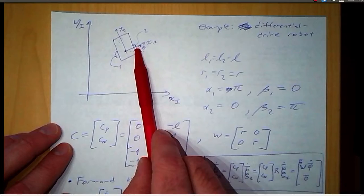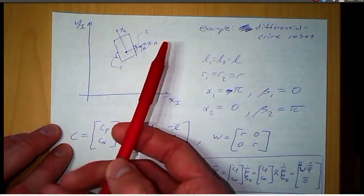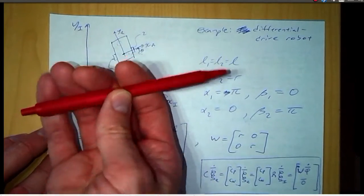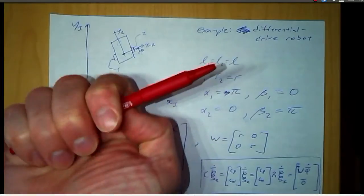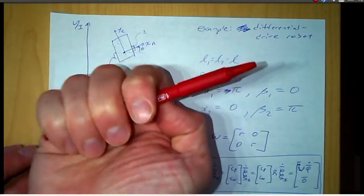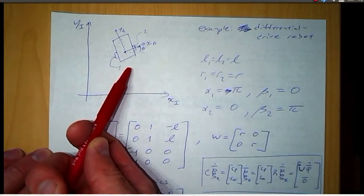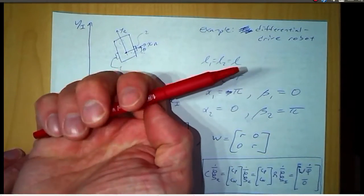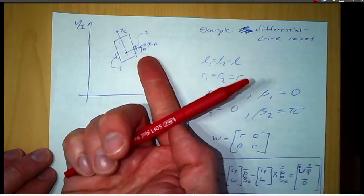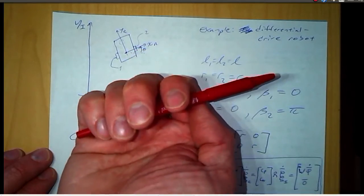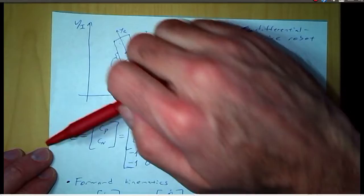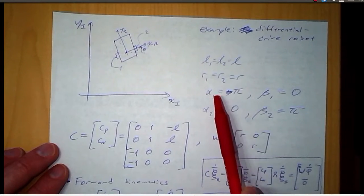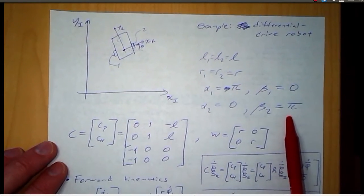For wheel two, it's on the positive x-axis, so alpha two equals zero. In that configuration, positive wheel direction points in a direction that would result in the origin of the robot moving in the negative robot y-direction. So we need to rotate the wheel rotation direction: alpha two is zero and beta two is pi, so that wheel two rotates such that the robot origin moves in the positive robot y-direction. To summarize: alpha one is pi, beta one is zero, alpha two is zero, beta two is pi.